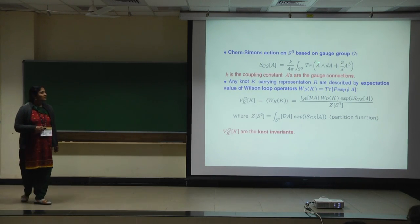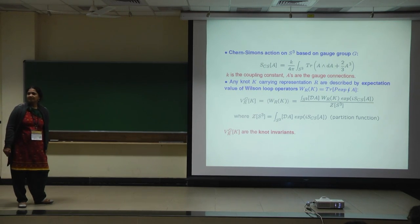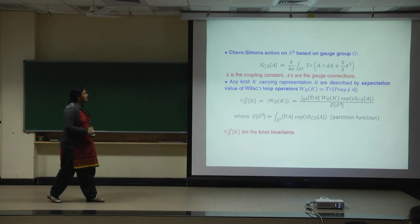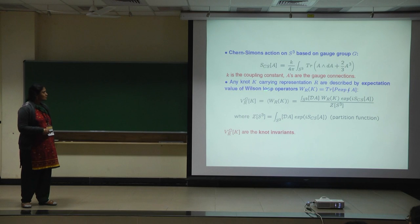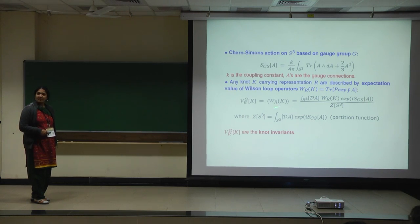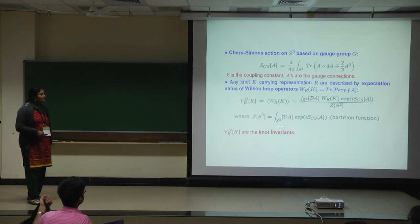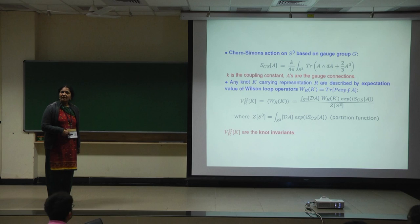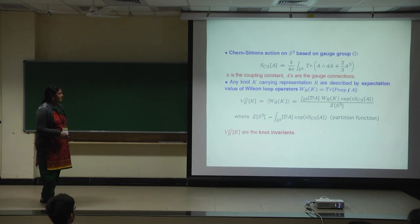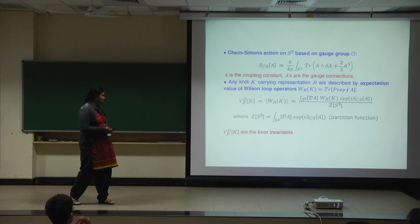We look at the Chern-Simons action on S³, the three-sphere, based on any compact semisimple gauge group. It is a three-form on a three-sphere; K is the coupling, and A are the matrix-valued gauge connections. We are interested in operators which are gauge invariant and topological — the Wilson loop operators — and their expectation values are supposed to give information about the knot. There are differences for different gauge groups and different representations.